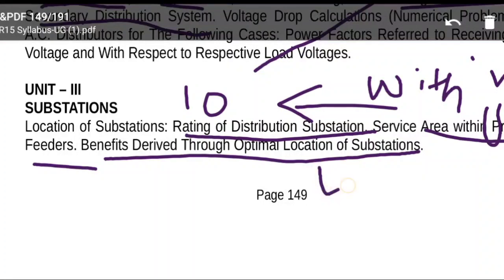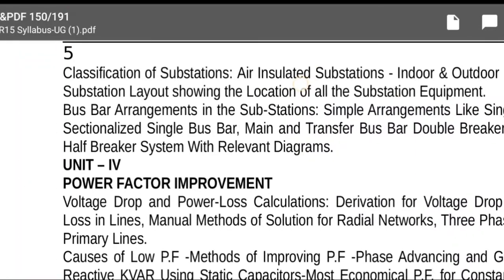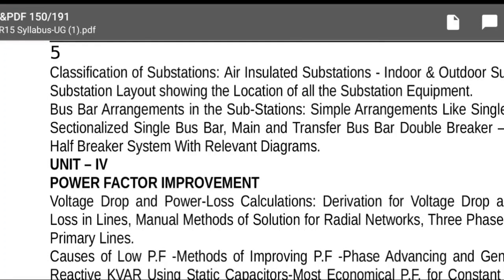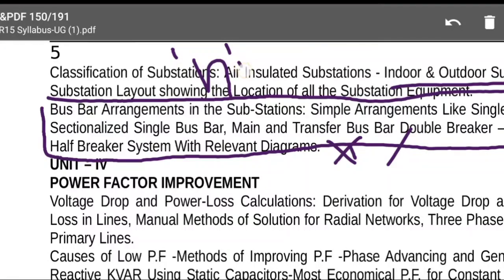Benefits of optimal substation location include minimum voltage drops and reduced number of customers affected by power outages — locating the substation near the load center minimizes outages. This is likely a 10-mark question. Substation service area methods and N primary feeders together can answer a 10-mark question. Classification of substations — such as air-insulated substations — will appear as 2-mark questions.